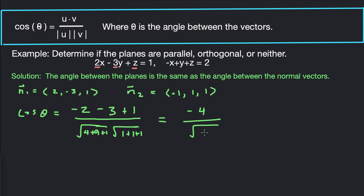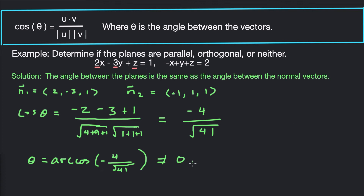So theta equals arccos(-4 / sqrt(41)). This is not equal to zero, not equal to pi, and not equal to pi over 2. So it's not parallel — because it's not 0 or pi — and it's not orthogonal — because it's not pi over 2. Therefore these planes are neither parallel nor orthogonal; the planes are neither.